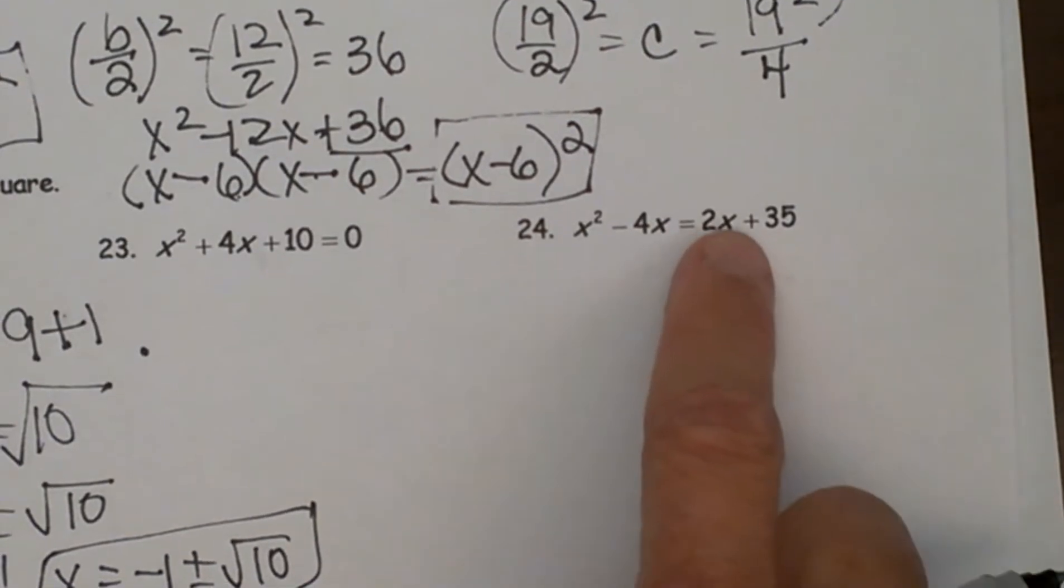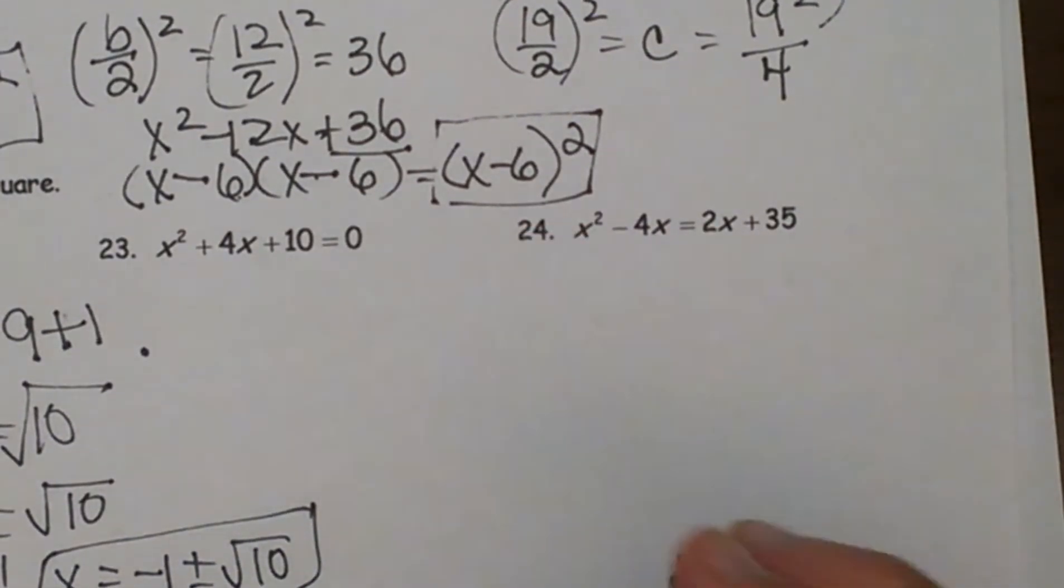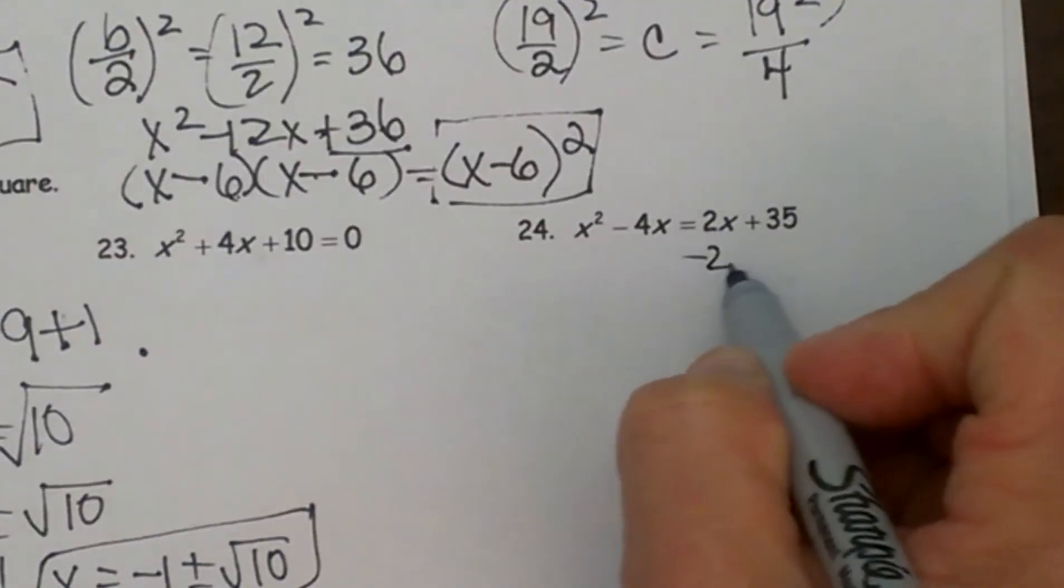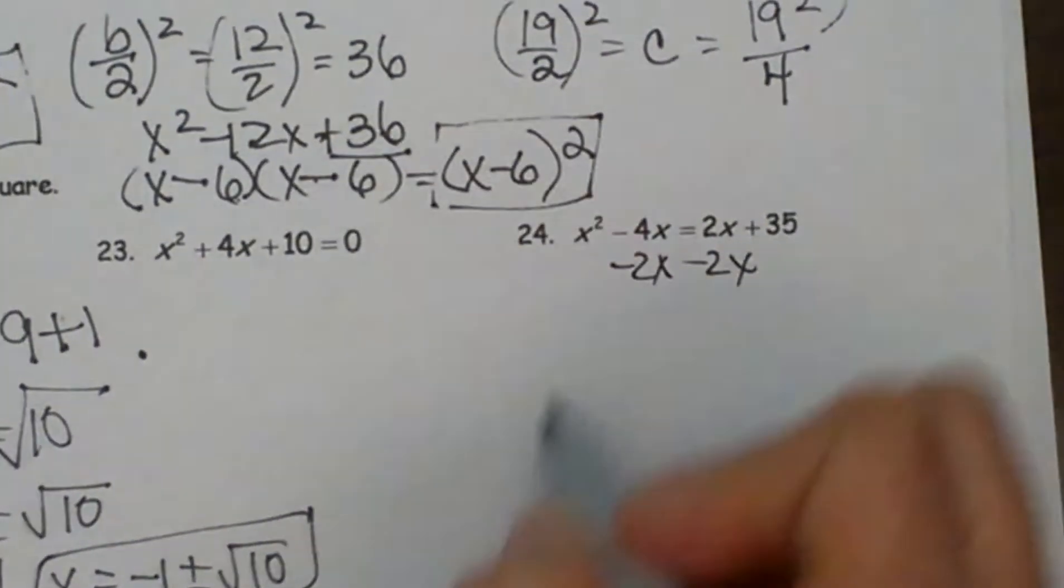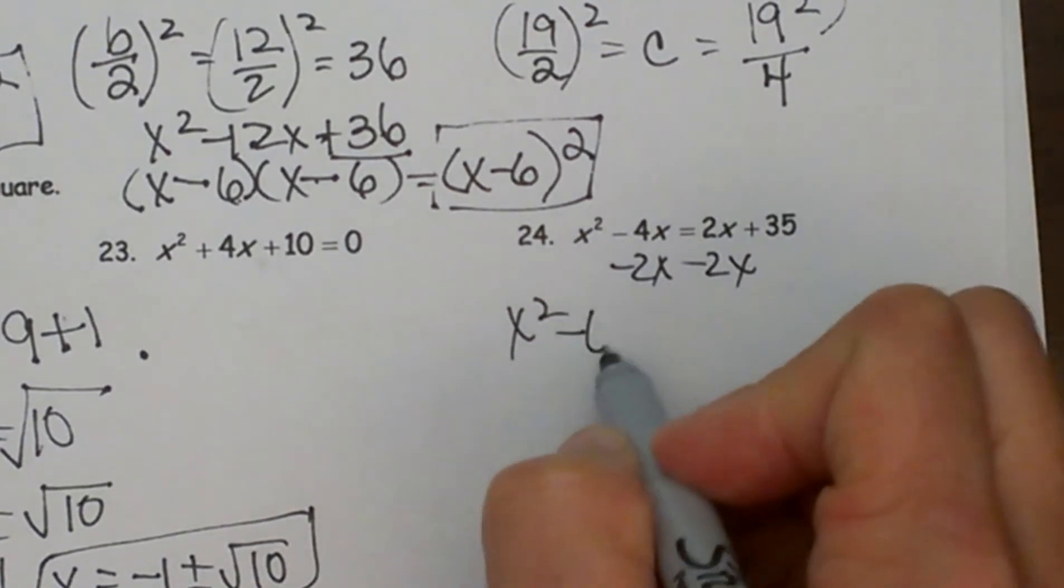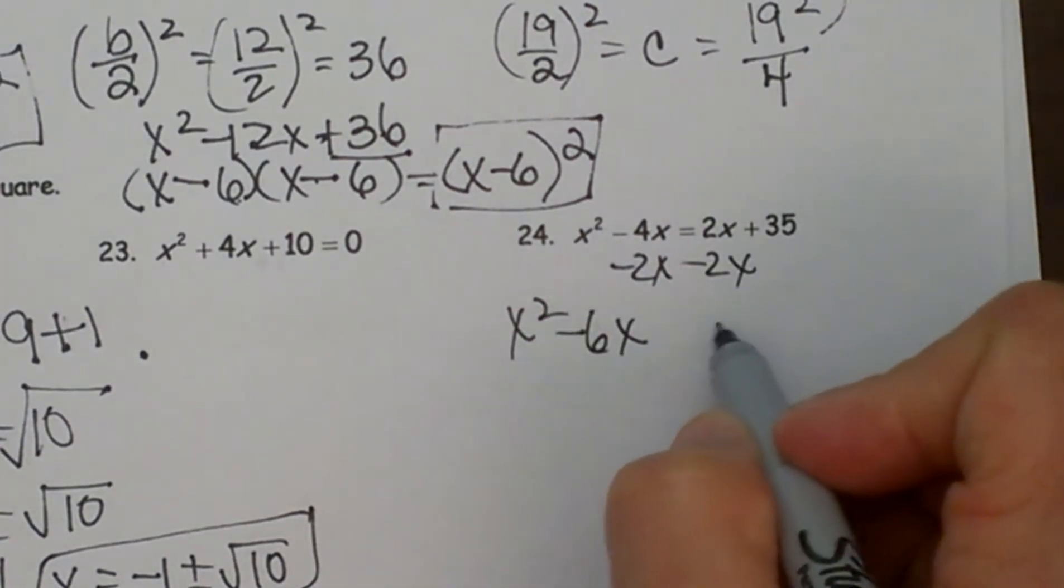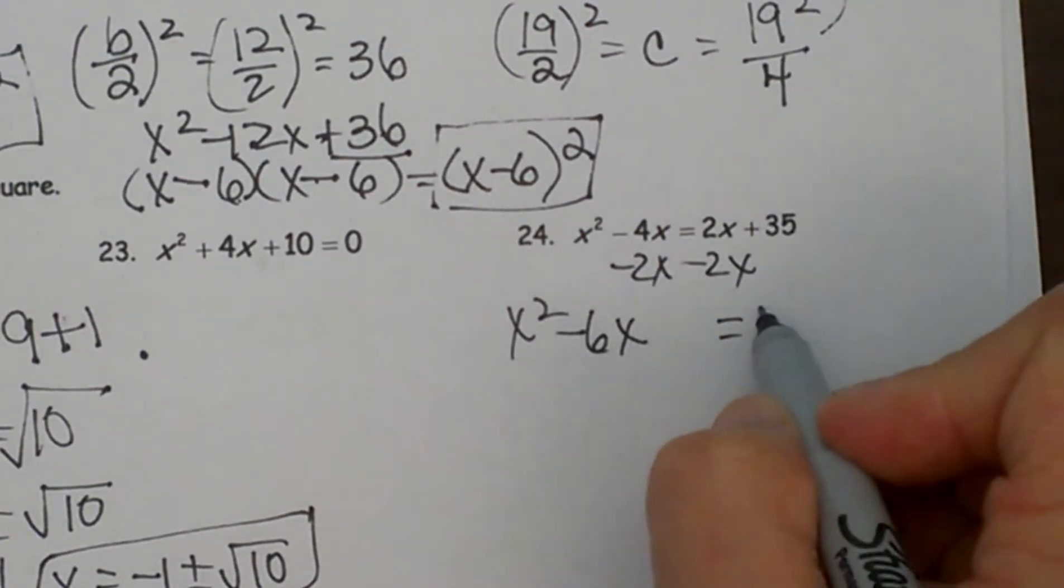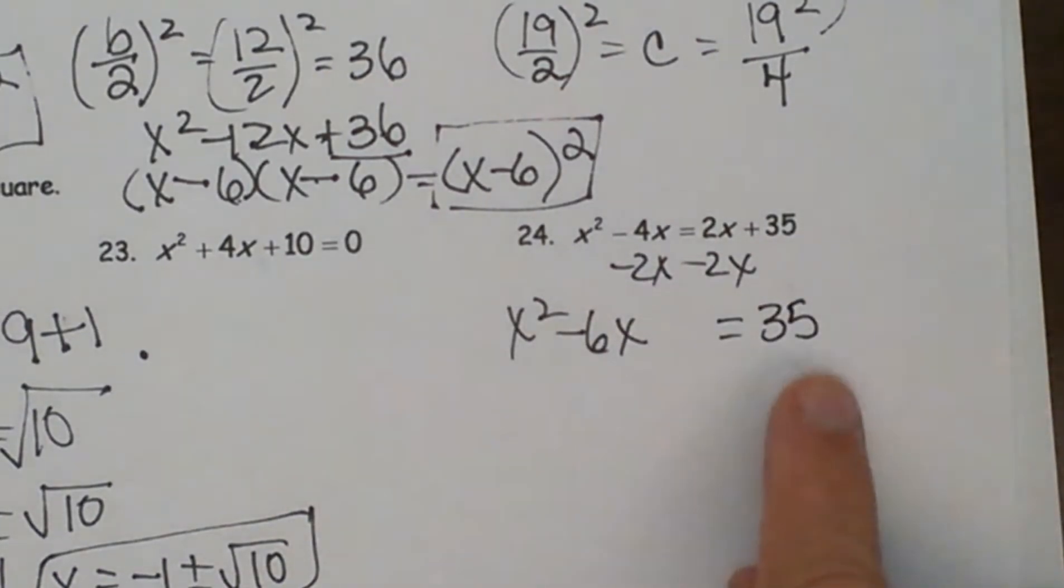To complete the square we want to get all the terms with x's on the same side. So I am going to move this 2x over to the other side of the equation. So I am going to have x² minus 4x minus 2x is negative 6x is equal to, and I am just going to bring down the 35. My constant stays on the right.